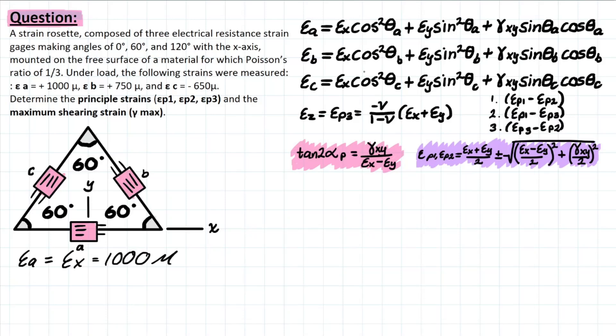And similarly, we have to go ahead with epsilon_b. So epsilon_b is given to us. However, it's not aligned with any particular reference axis right now. So we'll just write down that epsilon_b is going to equal to 750.